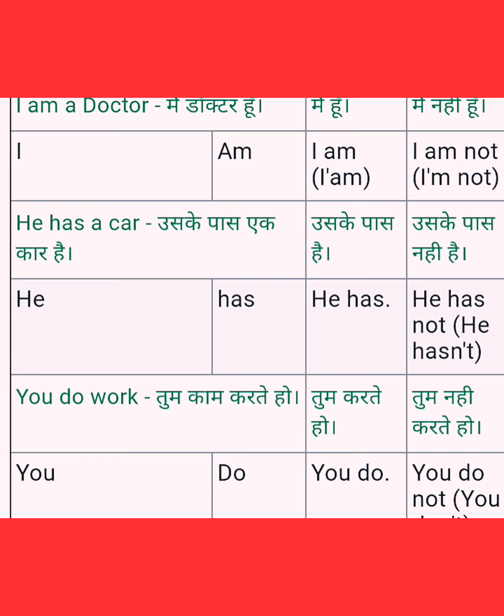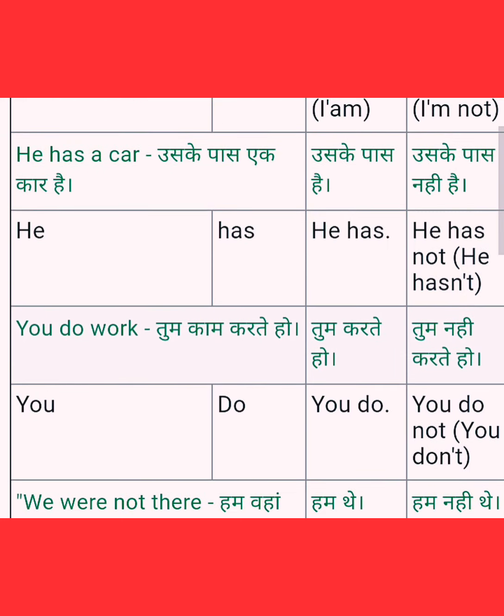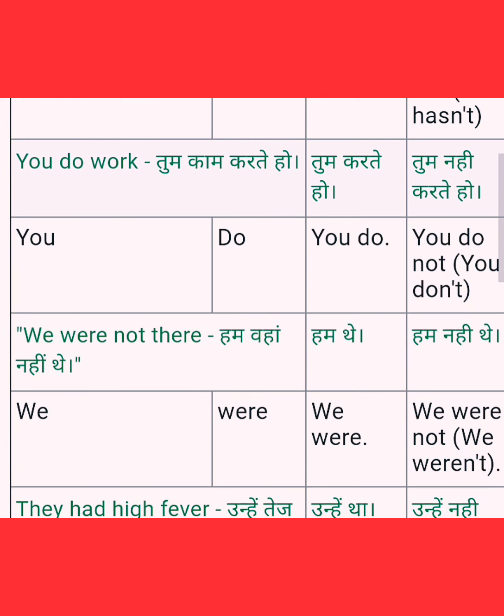Next: 'You do work' — tum kaam karte ho. Positive short answer: 'you do'. Negative: 'you do not', and in short form 'you don't'. So you don't is the contracted negative form.